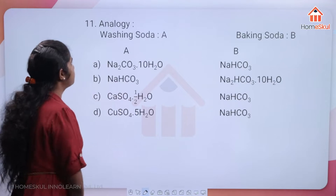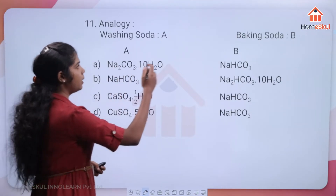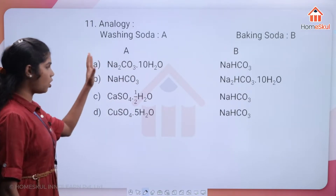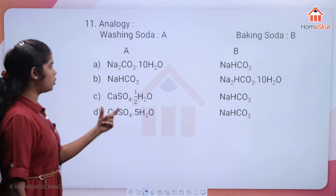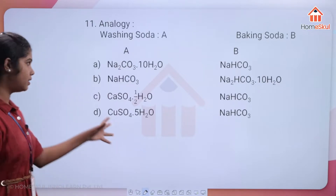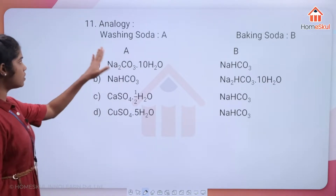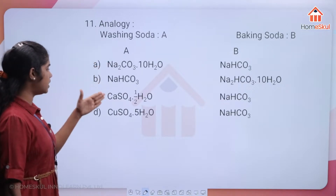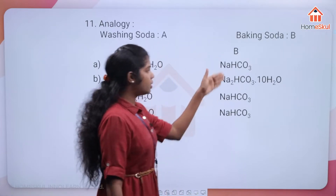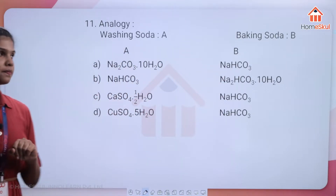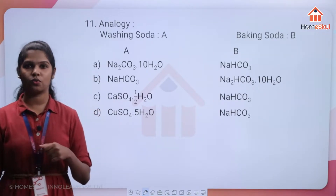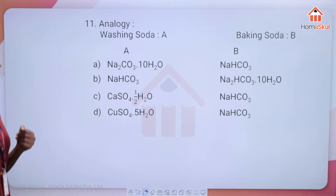Question 11 — Analogy: washing soda A, baking soda B. Match the correct formulas. Washing soda is Na2CO3·10H2O and baking soda is NaHCO3. Option A is the correct match.